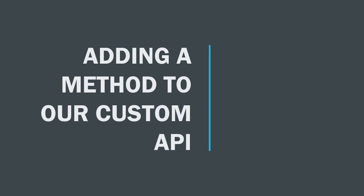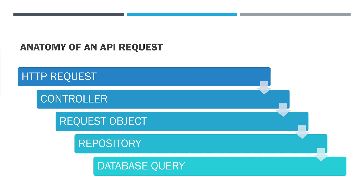Adding a method to our custom API. First, let's take a look at the anatomy of an API request. We have the HTTP request coming in and the controller picks it up, binds the values to our model, and then our request object does the processing, calls the repository, which then makes the database query call, and then the thing rolls backwards and returns the result to the client.